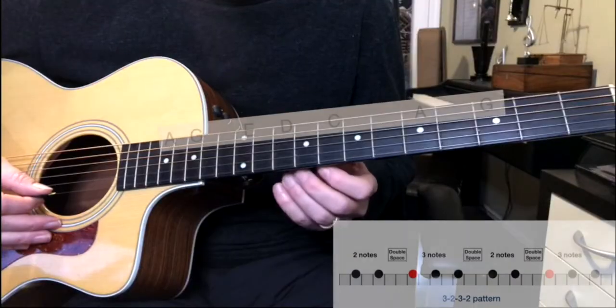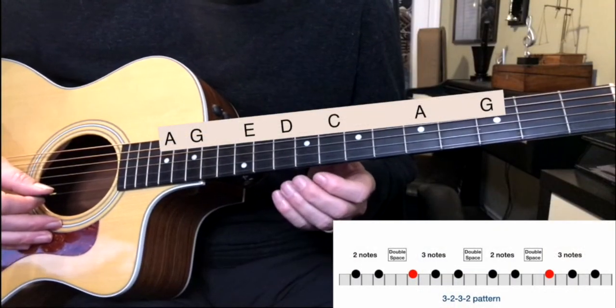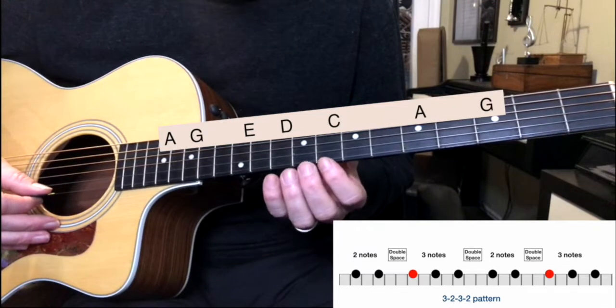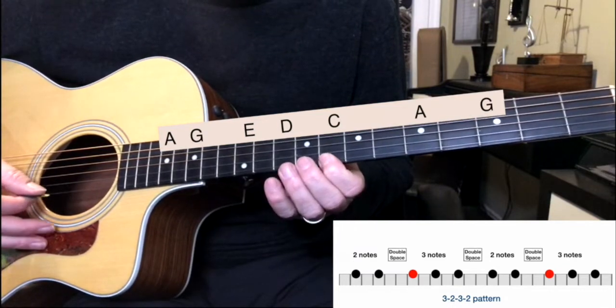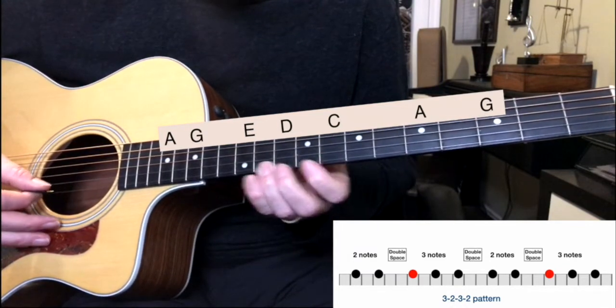So the three two three two pattern is pretty simple. If you're playing in the key of C, you start here on a C and you go up two to a D then to an E.